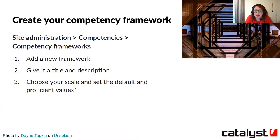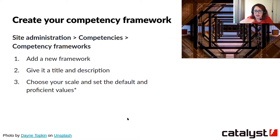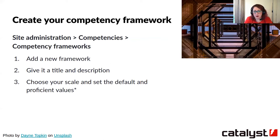First of all, you need to set up your competency framework in Moodle. You add your framework and give it a title. Then comes the first confusing bit: choosing your scale and your default and proficiency values. You can use a scale already existing in Moodle or create a brand new one — if creating a new one, do that before setting up your framework. The default value is what applies once a competency is met, not when it's first assigned. So if they've met it, it would be competent or competent with support. The proficiency value is the level at which a learner is considered proficient or competent.